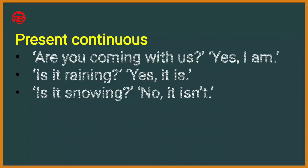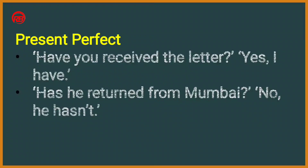In present continuous: 'Are you coming with us?' — Yes, I am. 'Is it raining?' — Yes, it is. 'Is it snowing?' — No, it is not. In present continuous, for singular form we use am or is, and for plural form we use are.